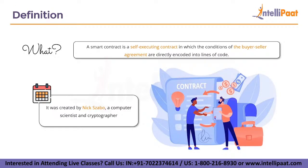Nick Szabo, a computer scientist and cryptographer recognized for his work on digital contracts and digital currency, coined the phrase Smart Contracts in 1997 — long before Bitcoin was invented. Nick compares Smart Contracts to a vending machine in his article 'Formalizing and Securing Simple Relationships on Public Networks.' The theoretical machine accepts coins and, using simple calculations, delivers a product and change based on the user's selected option. He recommends embedding Smart Contracts in a number of attributes that may then be managed digitally.